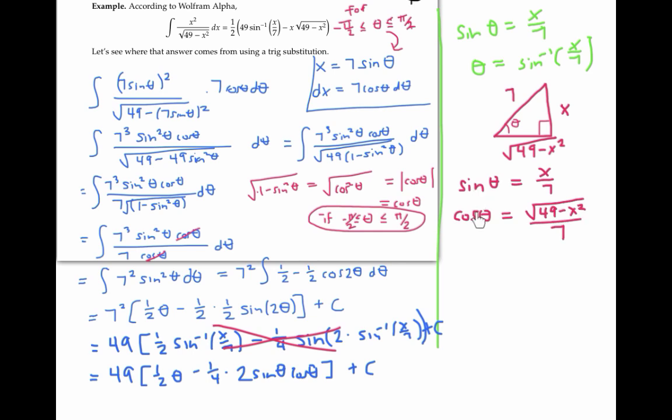We can use these two equations to substitute in for sine theta and cosine theta. And to get rid of this naked theta here, we'll still have to use the fact that theta is inverse sine of x over seven. Those substitutions lead us to this answer. And a little bit of simplification leads us to the same answer that Wolfram Alpha gave us.